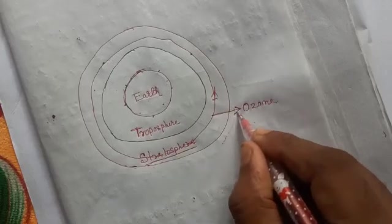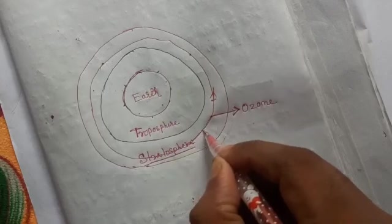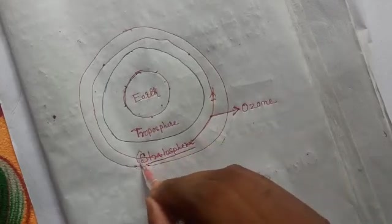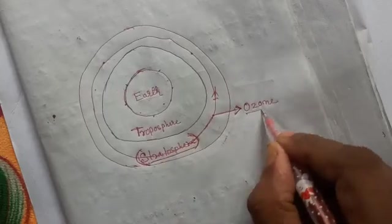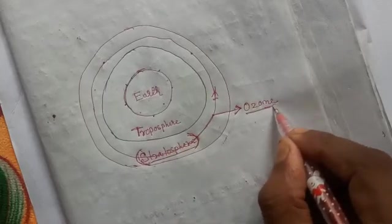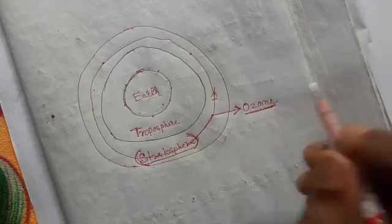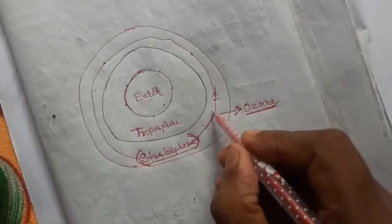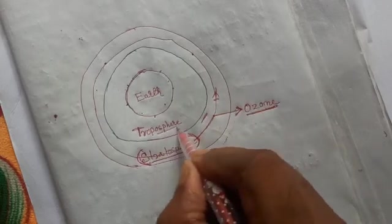Now if the question comes where you will find ozone layer, the answer will be ozone layer is found in stratosphere. Ozone layer helps us from ultraviolet rays that come from the sun.